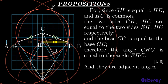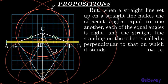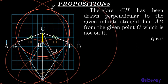I say that CH has been drawn perpendicular to the given infinite straight line AB from the given point C which is not on it. For since GH is equal to HE and HC is common, the two sides GH, HC are equal to the two sides EH, HC respectively. And the base CG is equal to the base CE. Therefore the angle CHG is equal to the angle EHC, by Book 1 Proposition 8. And they are adjacent angles. But when a straight line set up on a straight line makes the adjacent angles equal to one another, each of the equal angles is right, and the straight line standing on the other is called a perpendicular to that on which it stands, by Book 1 Definition 10. Therefore CH has been drawn perpendicular to the given infinite straight line AB from the given point C which is not on it. That which was to be done.